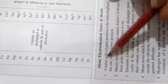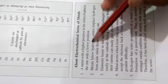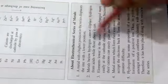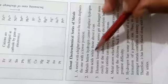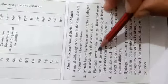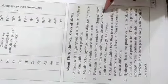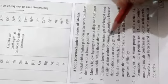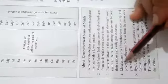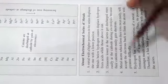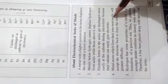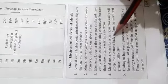About the electrochemical series: a metal with a higher position in the series displaces the one with a lower position — the more powerful displaces the weaker one. Metals below hydrogen cannot displace hydrogen from acids, while those above it can. Elements lower in the series get discharged more easily at the cathode during electrolysis because their cations can gain electrons easily — the least electropositive are discharged first. Metal atoms that form ions most easily will accept electrons back to form atoms with the greatest difficulty.